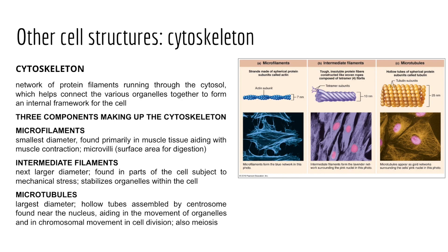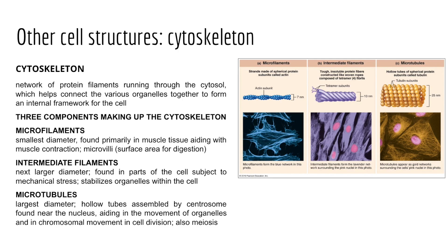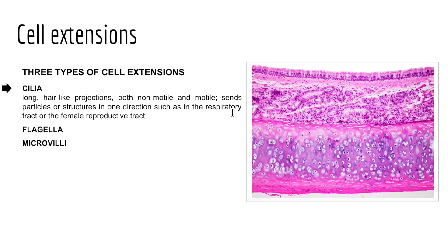Now that we've talked about the cell membrane and organelles found within the cell, I want to mention some cell extensions — specifically cilia, flagella, and microvilli. First, cilia are numerous hair-like projections that extend from the surface of a cell and are involved with moving particles in one direction. Cilia are found in the respiratory tract, where they sweep foreign particles trapped in mucus away from the lungs. This example from our PAL site shows cilia along the internal lumen of the trachea.